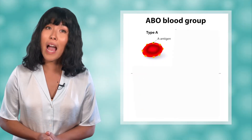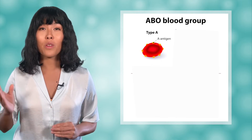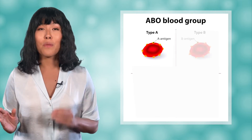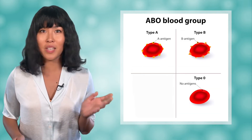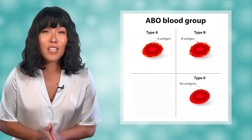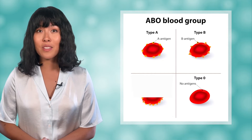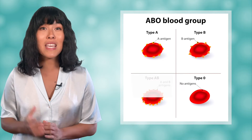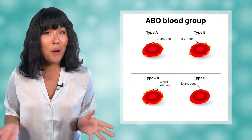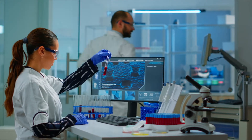Our blood types are actually determined by the presence or absence of certain antigens in the blood cell. The A allele codes for the A antigen, while the B allele codes for the B antigen. The O allele does not code for either, which is why it's recessive to both A and B. You only need one copy of the A or B allele to make the A or B antigen. And if you have both the A and B alleles, you'll make both antigens. So how do we end up with different blood types from our parents?